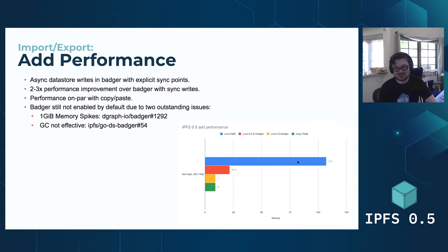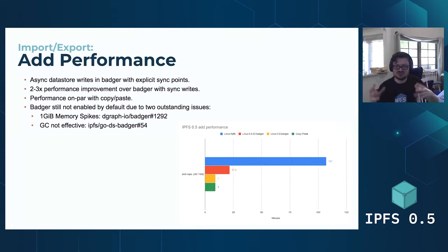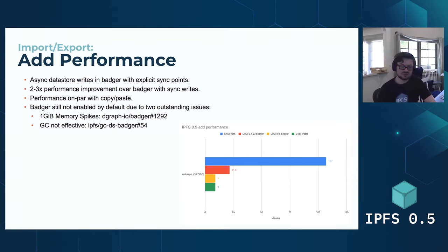The blue bar is how long it takes with FlatFS — that's still unfortunately the default data store. It's the default for two reasons: one, Badger sometimes spikes to one gigabyte of memory usage, which is an issue we're planning on fixing in the next couple of releases. And Badger's garbage collection — reclaiming deleted storage space — doesn't always work as well as we'd hope. So we're trying to improve that before we make Badger the default.